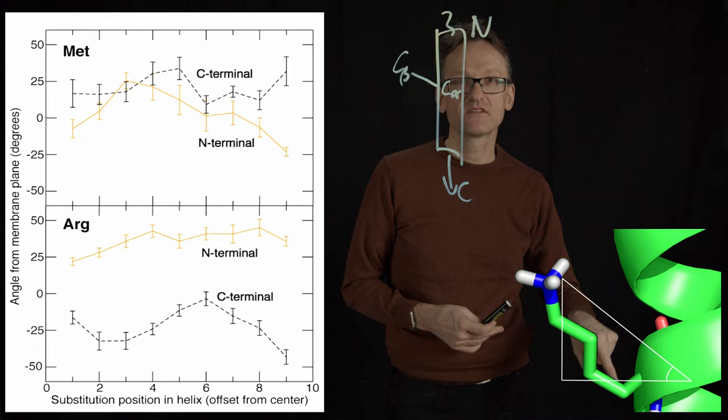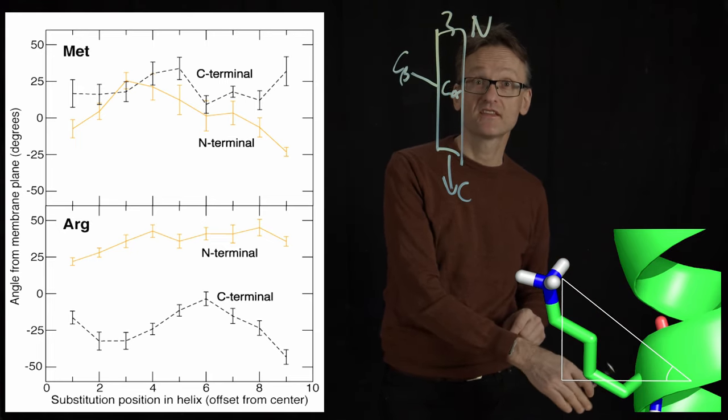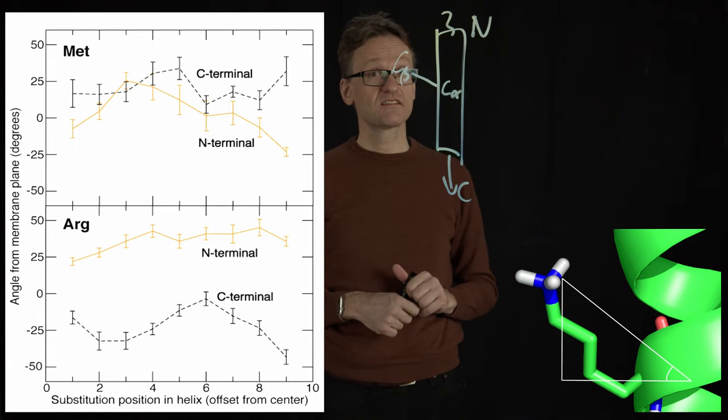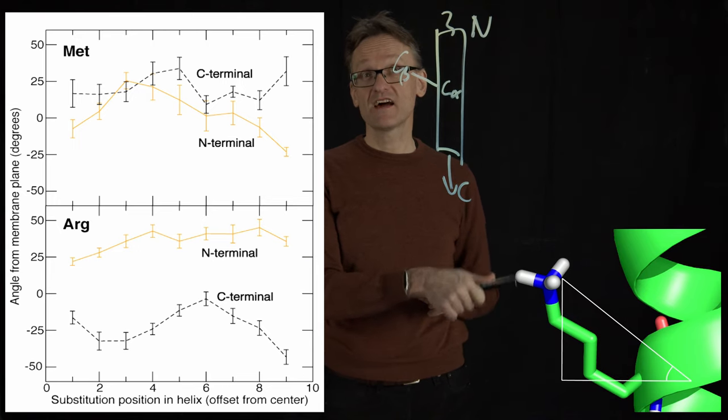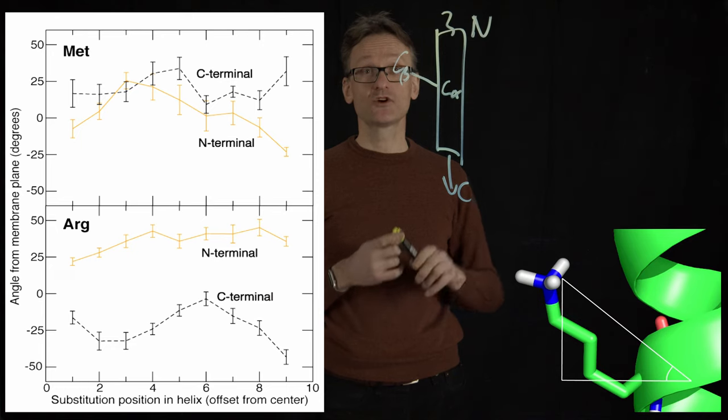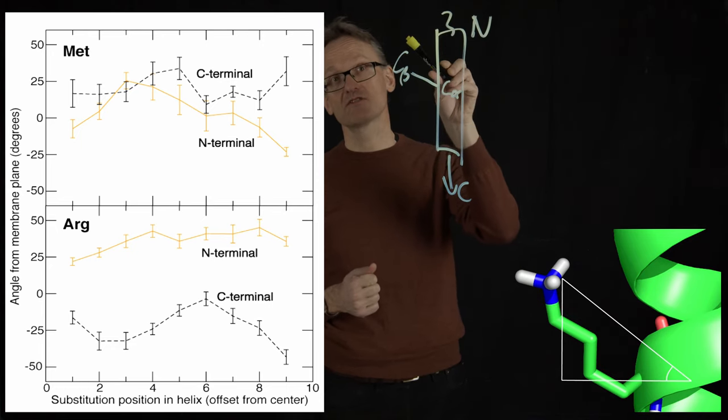Do you see that that bond is pointing that way? So the N-terminus here, the start of the chain is at the bottom and this helix is pointing up. That means that if I now take this lysine, that would like to point outwards. If I put this close to the N-terminus, well, I'm already pointing a little bit in the right direction after the first bond.